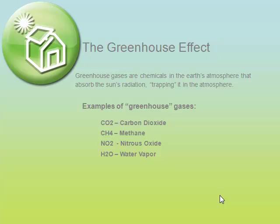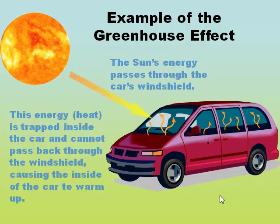By the way, greenhouses are useful for growing plants because they both allow sunlight to enter, and the glass panes surrounding it prevent heat from escaping, making it a good environment for plants to thrive. This example of the greenhouse effect shows how the sun's energy passes through the windshield of this car and is trapped on the inside as heat. This is similar to what's happening in the Earth's atmosphere, as carbon dioxide and other greenhouse gases are absorbing the sun's radiation and trapping it in the atmosphere.